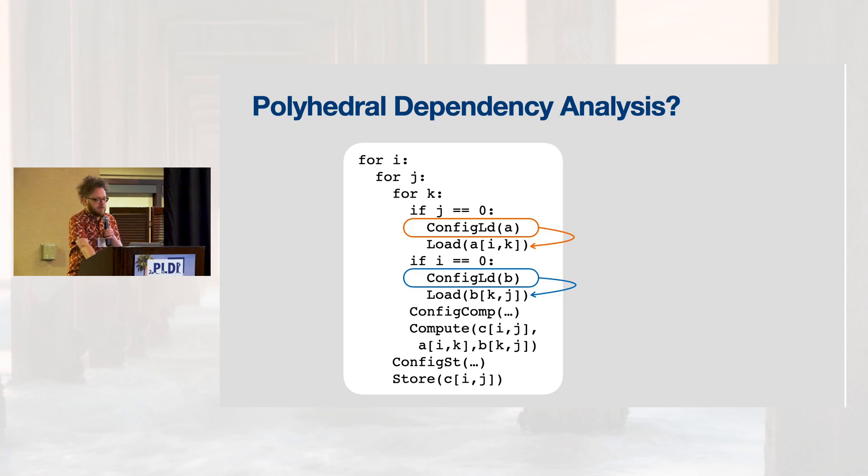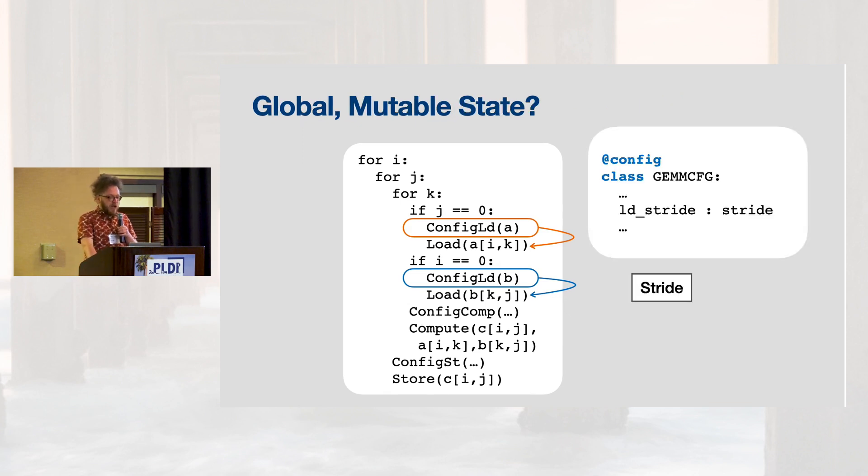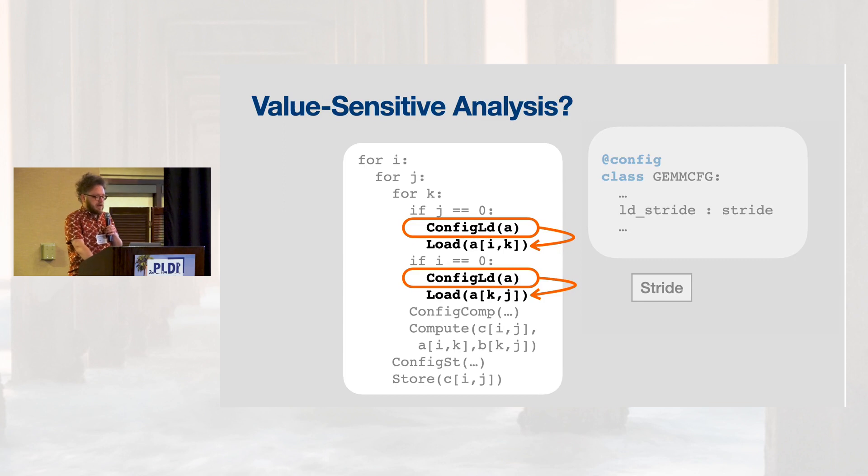So one standard answer for this sort of question, especially in the case of looping code over arrays, is to have some sort of dependency analysis using polyhedral sets over iteration spaces. However, such analyses don't handle the problem of global mutable state, which is what configuration state is. Specifically, when there are multiple redundant configurations of the same parameter, such as for instance I've changed both to just be dealing with the buffer A here, then we need a value sensitive analysis to identify those redundancies. So obviously, the second config load A here is just setting the same parameter as the first one. But if all you're looking at is what memory is touched, you won't know that.